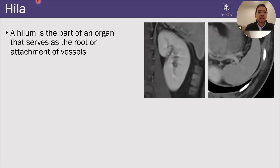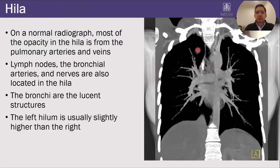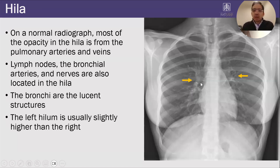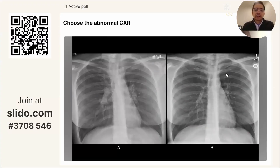Let's next talk about the hila. The hilum are part of an organ that serve as the root or the attachment of vessels. On a normal radiograph, most of the opacity of the hila is from the pulmonary arteries and the veins. Lymph nodes and the bronchial arteries only account for a small proportion of the hila, and then the bronchi are the lucent structures. I'm looking at the hila making sure that both are about the same size, density, and approximately the same level, although the left hilum is usually a little bit higher than the right.